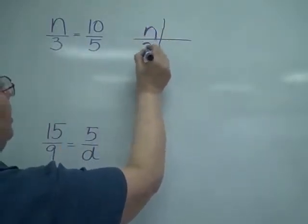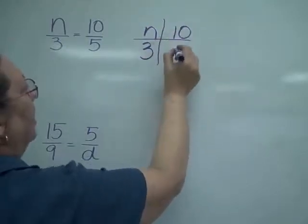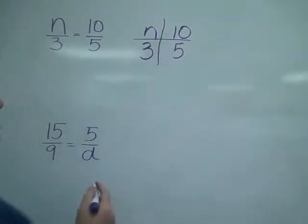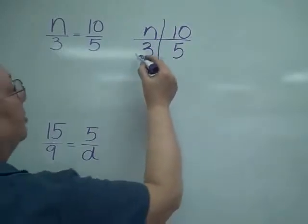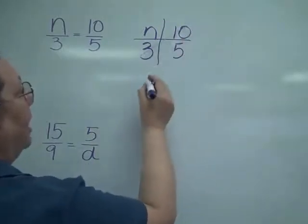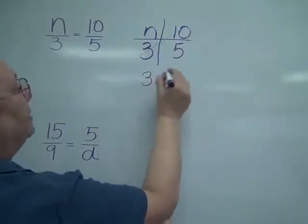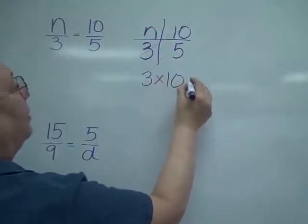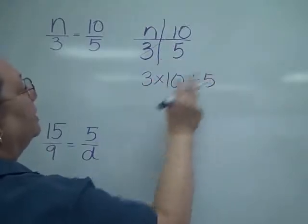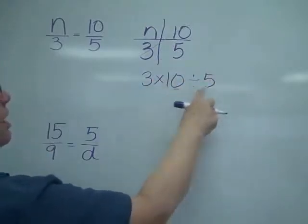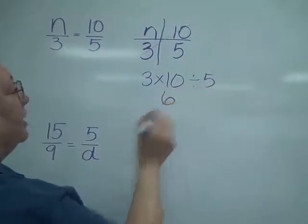So I have n, 3, 10, and 5. So now I am going to cross multiply. I multiply the 2 I can. So I've got 3 times 10, and then I'm going to divide by the 5. So 3 times 10 is 30, divided by 5 is 6.